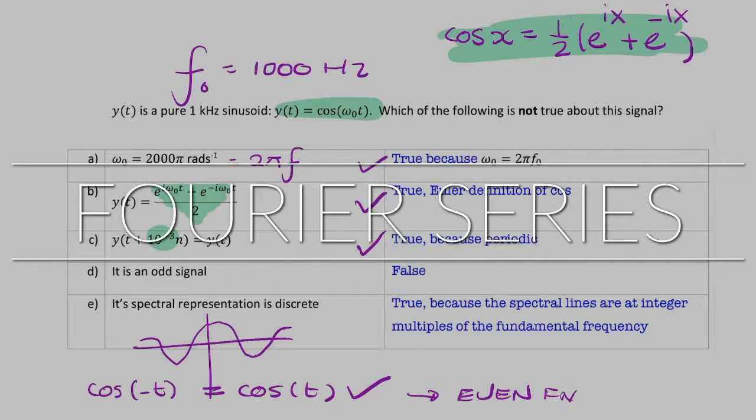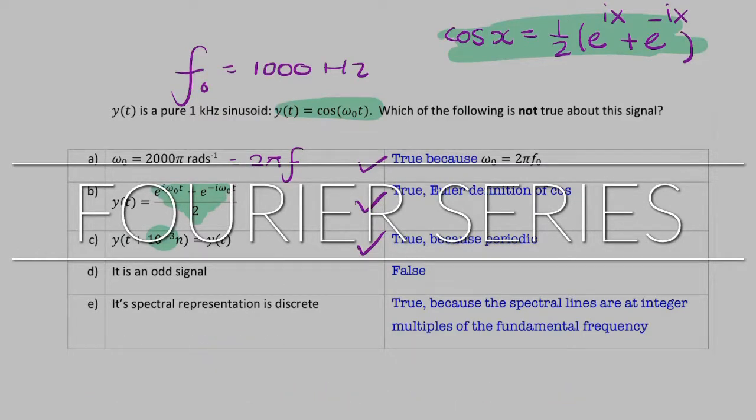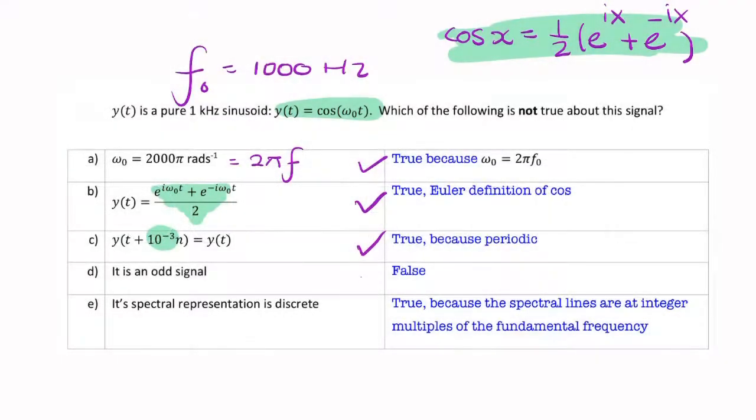And that isn't the case. So, it isn't an odd function. A sine function is odd. Cosine is even. So, this is a false statement because it's even.